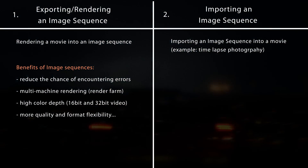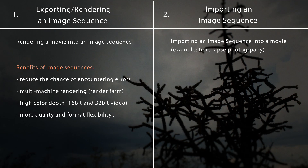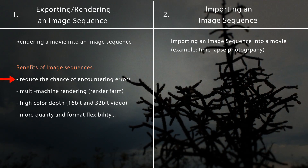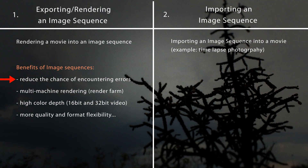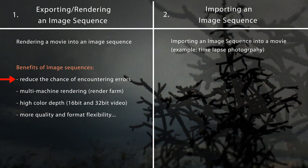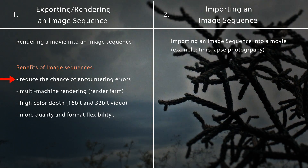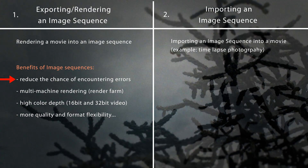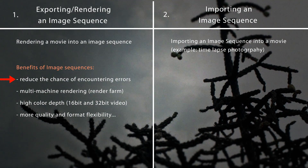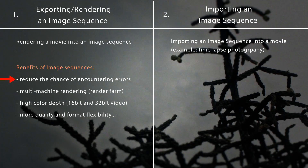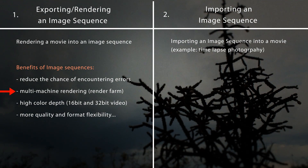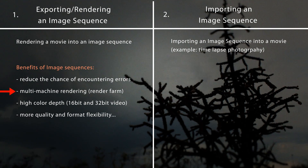Why would you want to use an image sequence? An image sequence has many advantages over rendering into a movie. You can reduce the chance of an error or a crash during the rendering process. When you render into a movie, if an error occurs during the render, the entire render will fail. But if you render into an image sequence, you can pick up at the last image in the sequence and continue rendering from there. When you render into an image sequence, you can also use multi-machine rendering for faster renders.